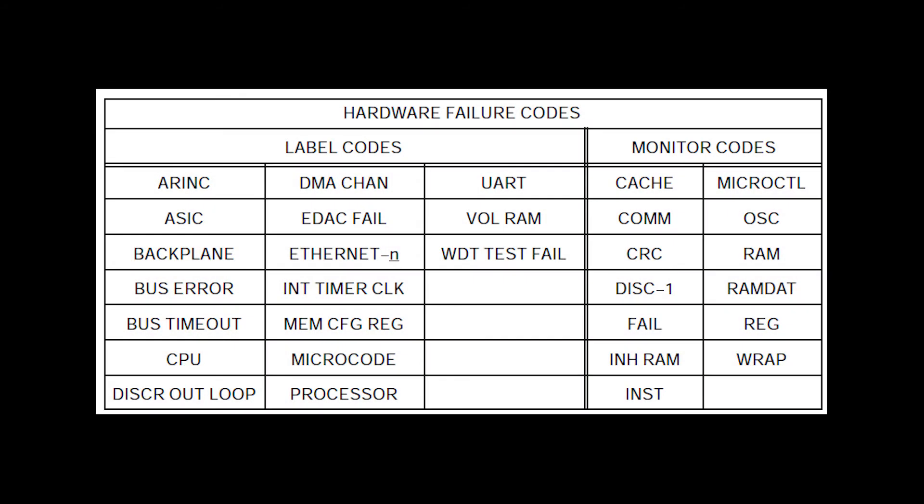Most of the hardware failures which occur within the FMC prevent the FMC from operating normally. This results in a failure code being logged. If an FMC has logged any of the following failure codes — either a label code or a monitor code — the FMC most likely has a hardware problem and the unit should be removed from service for repair. These codes may be logged in the in-flight faults or sensor faults.